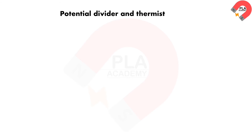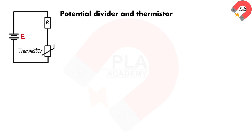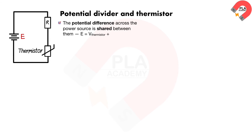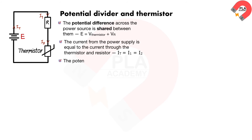Potential dividers are used widely in volume controls and sensory circuits using LDRs and thermistors. In a potential divider with a thermistor, the thermistor and resistor are connected in series, as shown in the diagram. The potential difference across the power source is shared between them, and the current from the power supply is equal to the current through the thermistor and resistor. The potential difference across each component is proportional to its resistance.